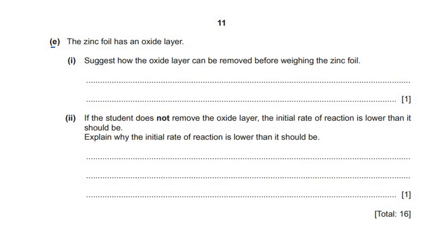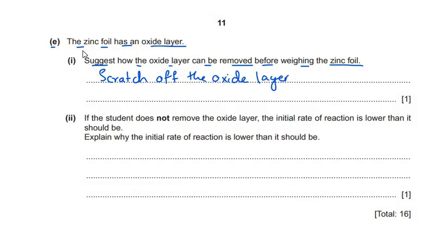The zinc foil has an oxide layer. Suggest how the oxide layer can be removed before weighing the zinc foil. The method is to scratch off the oxide layer with sandpaper. This also applies to magnesium strip — reactive metals like magnesium and zinc must be scratched with sandpaper to remove the oxide layer before use in an experiment.